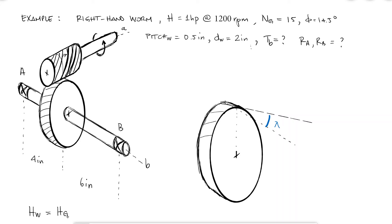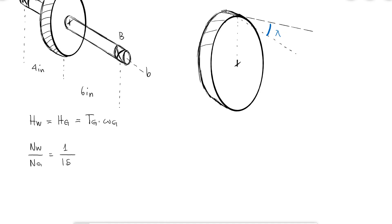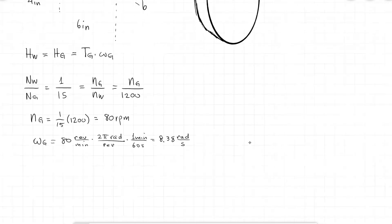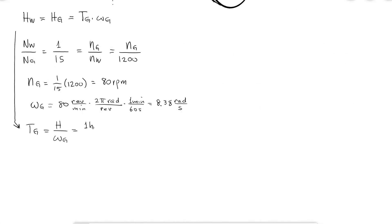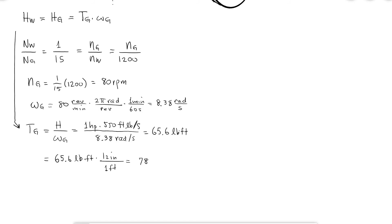To calculate the torque going into shaft B, which carries the gear, I need the rotation speed of the gear. The ratio of threads on the worm to teeth on the gear is 1 to 15, which gives the ratio of gear speed to worm speed. Since the worm rotates at 1200 rpm, the gear rotates at 80 rpm, equal to 8.38 radians per second. From this, I find the torque is 65.7 pound-feet or 788 pound-inches.